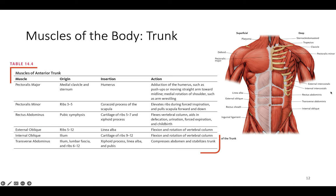Moving down the trunk: we have the pectoralis major and pectoralis minor, the rectus abdominis, and the transverse abdominis. We also have the external and internal obliques, and the external and internal intercostals running inside the rib cage.